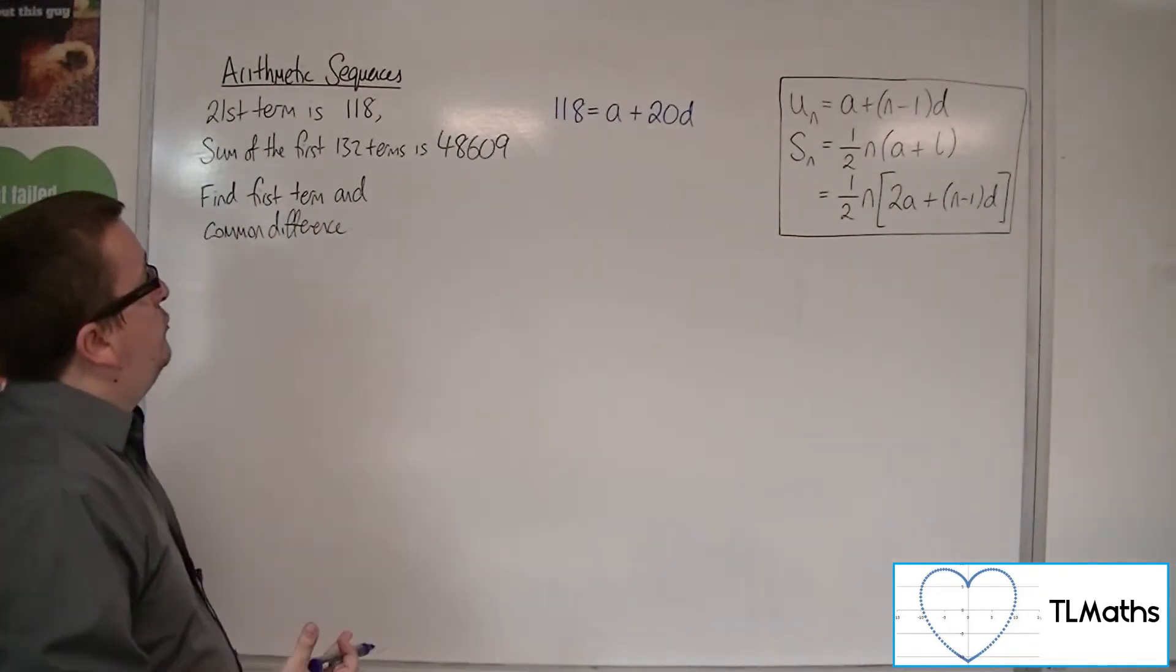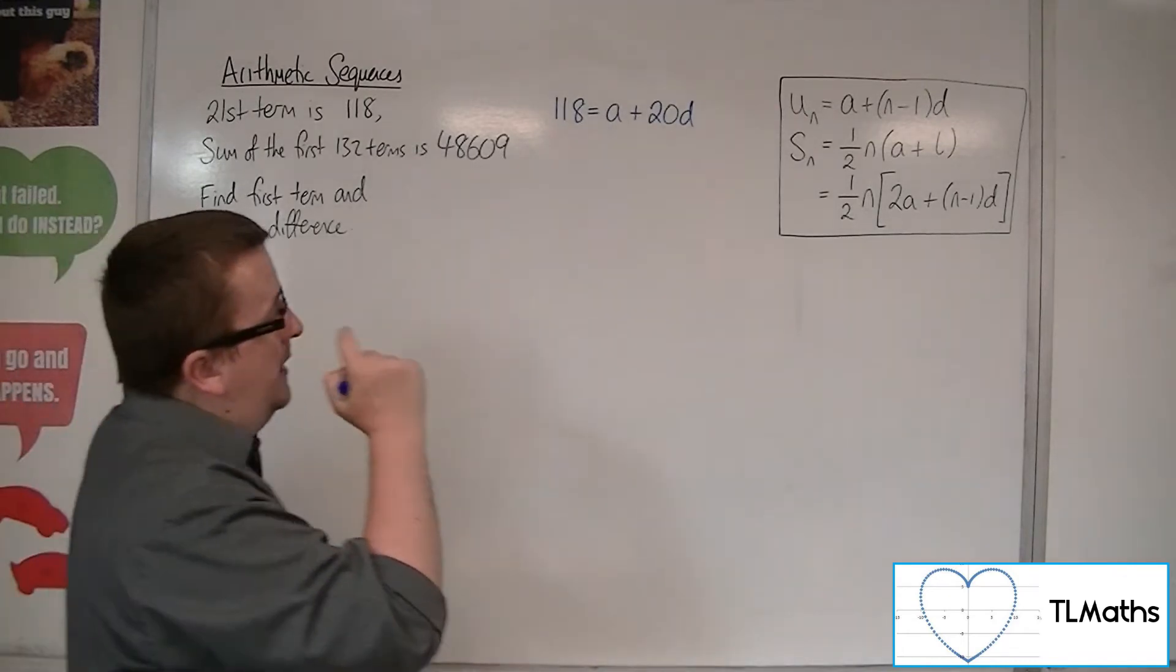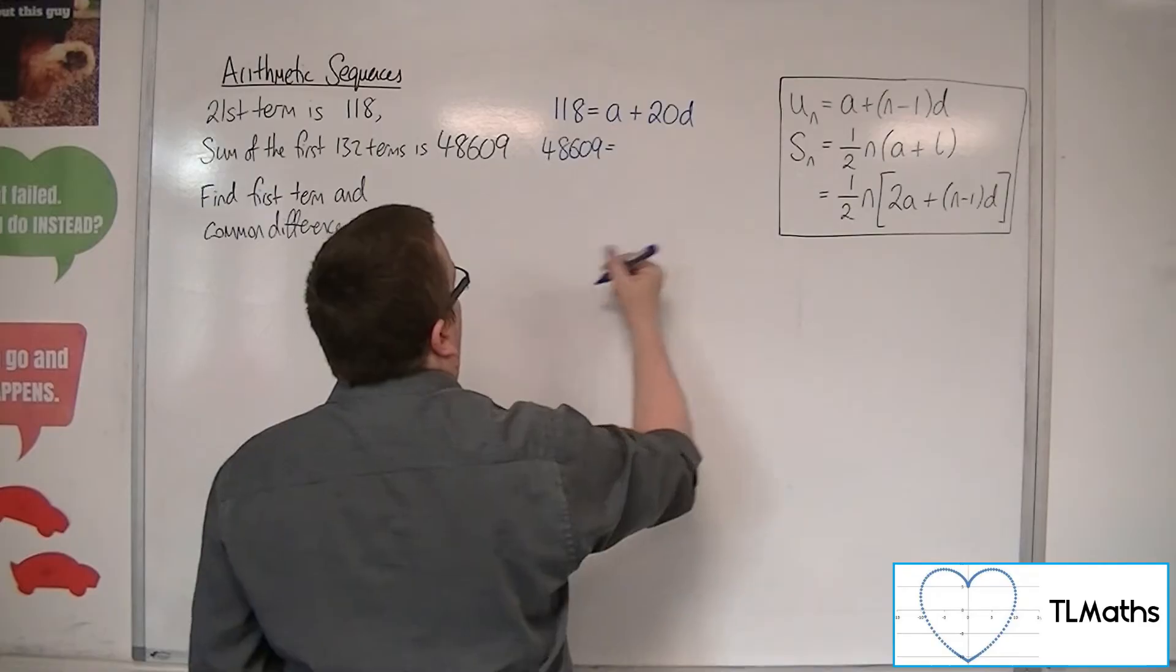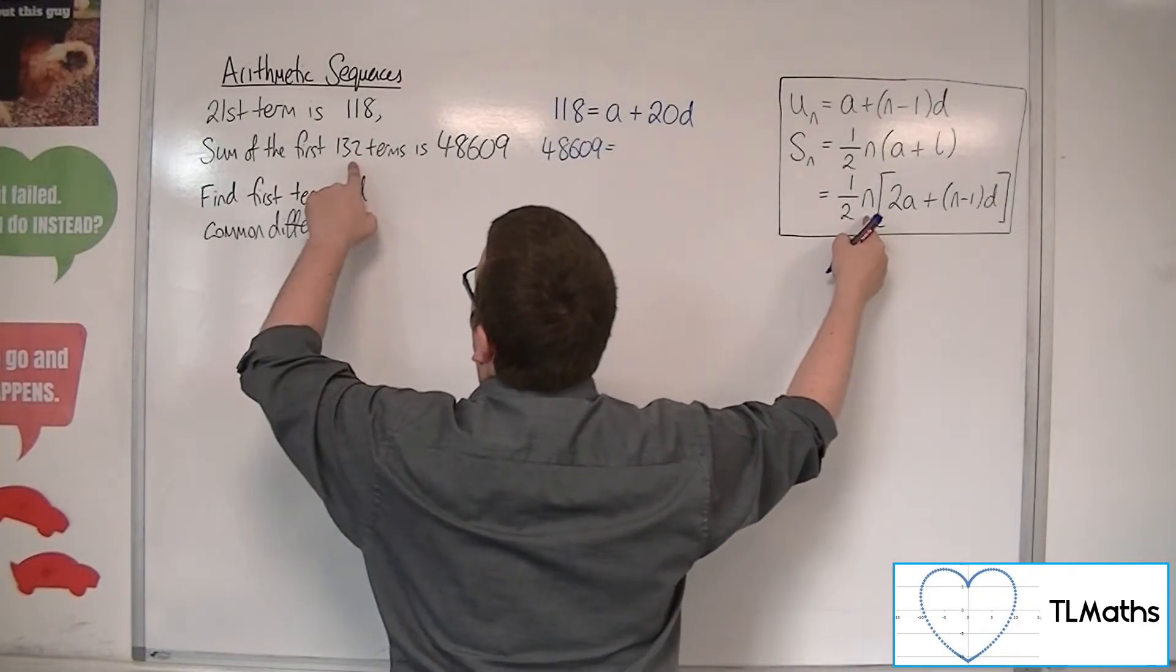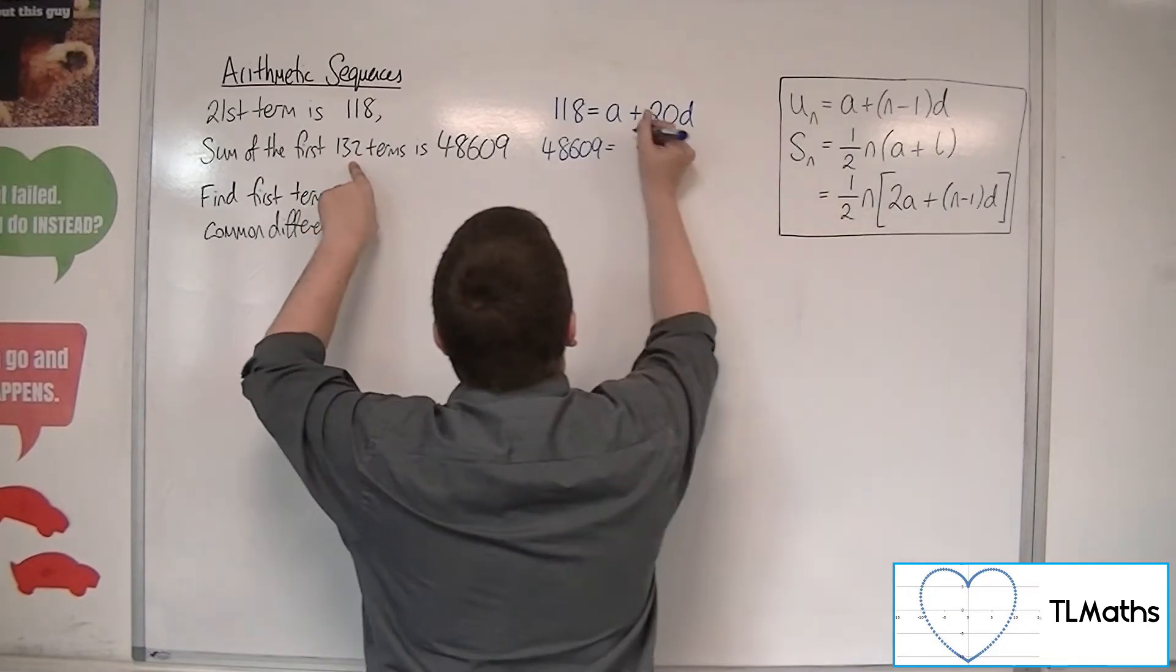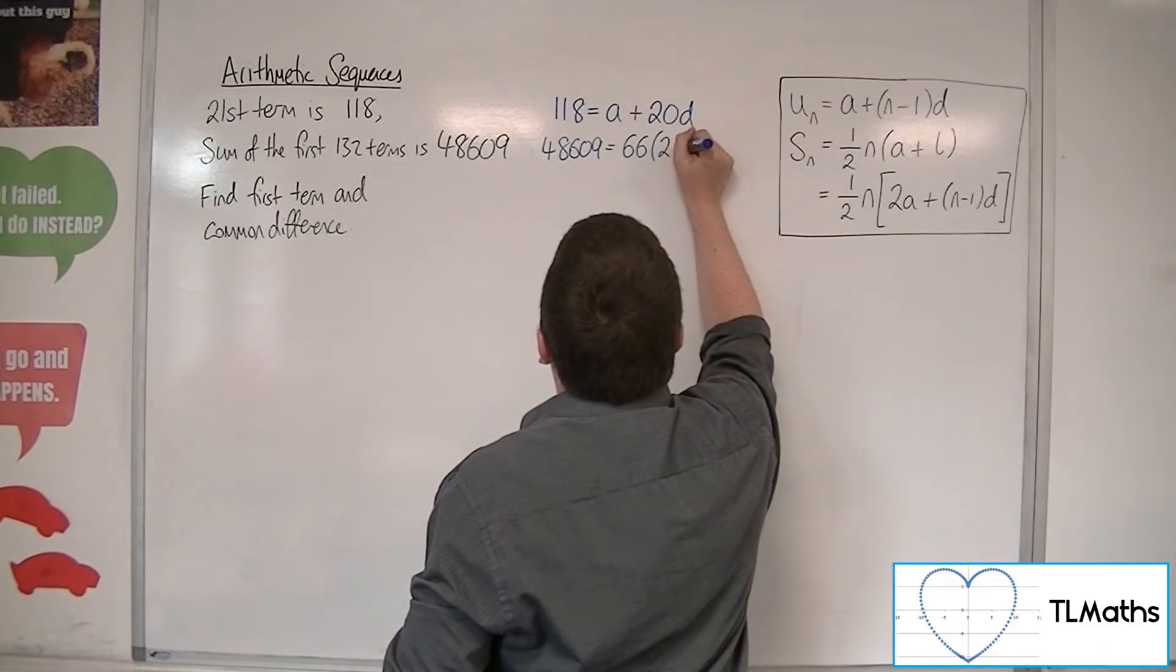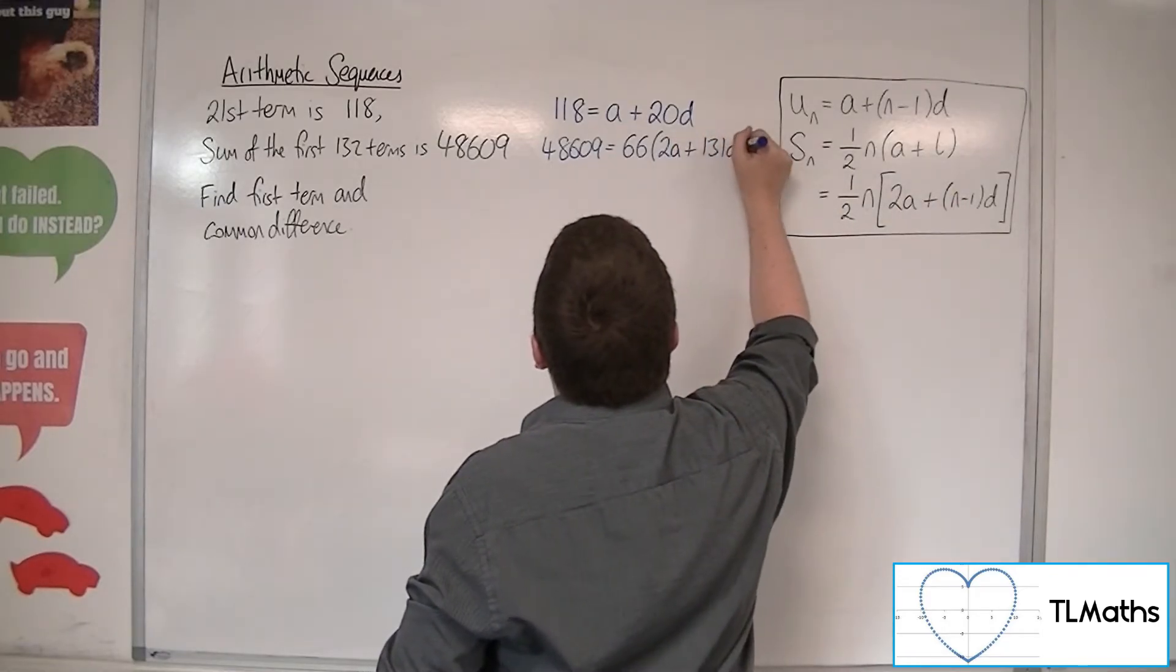If the sum of the first 132 terms is 48,609, then I can say using this formula that 48,609 must be equal to a half times N. So a half of N is, what's that, 66, so 66 lots of 2A plus N minus 1 times D, so 131D.